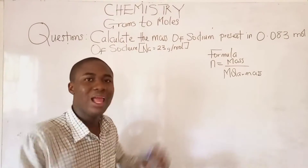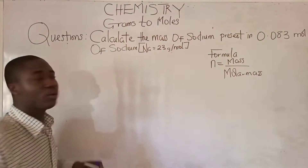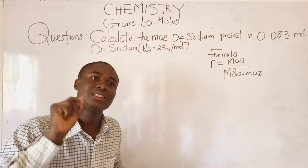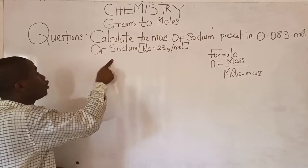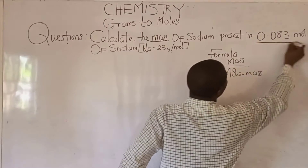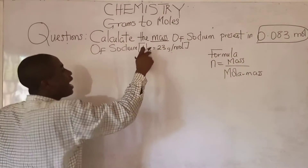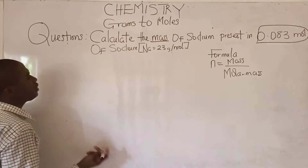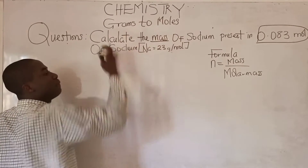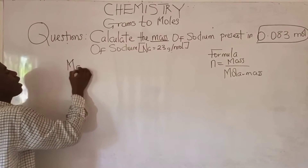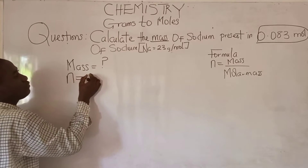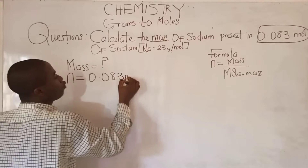Now let's move to the second question. The question says: calculate the mass of sodium present in 0.083 moles of sodium. The question is asking us to calculate mass; they gave us the number of moles. We use the same formula and cross multiply to make mass the subject. Mass equals n times molar mass, and the number of moles is 0.083 moles.